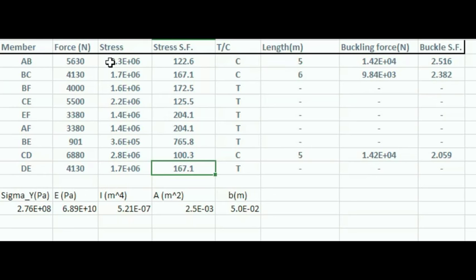However, the force alone cannot tell us what the safety factor of this truss is. To calculate the stress in each member, we can take the force divided by the area, which I have defined here. The safety factor due to the stress is simply the yield stress divided by the stress the member is experiencing from the load. By looking at the safety factor from the stress in the truss, we see that none of the members are close to failing or close to the yield stress.